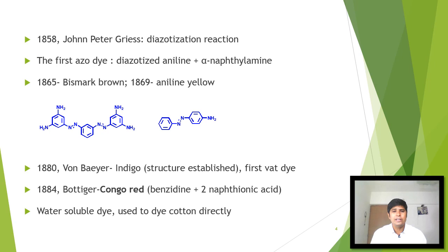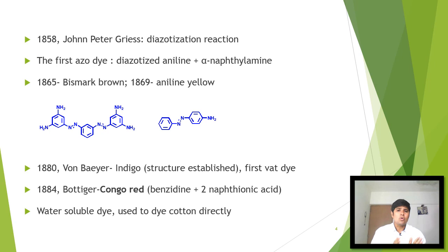In 1884, Böttiger synthesized Congo Red dye by the reaction of benzidine with two moles of naphthionic acid. This Congo Red dye is a water-soluble dye, and hence it is used to dye cotton directly.